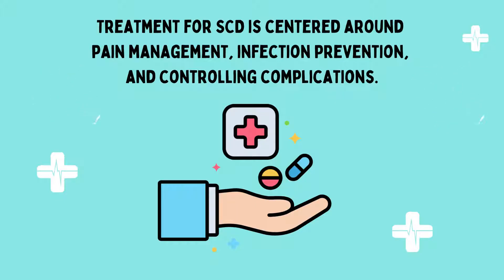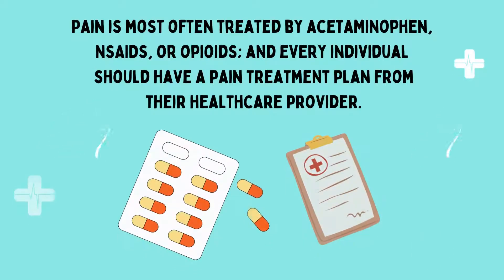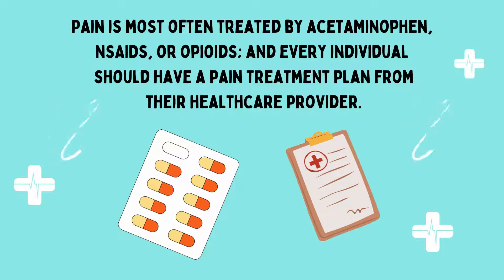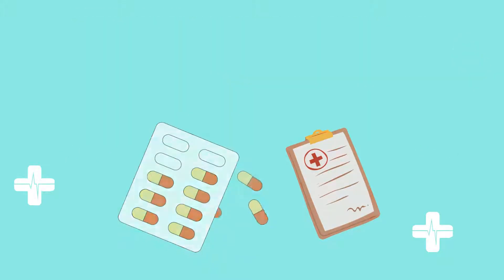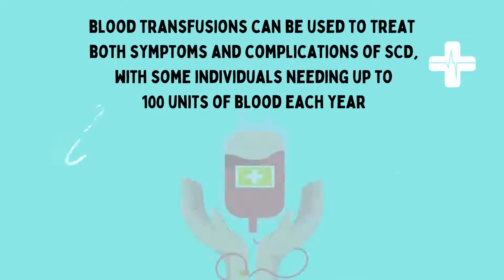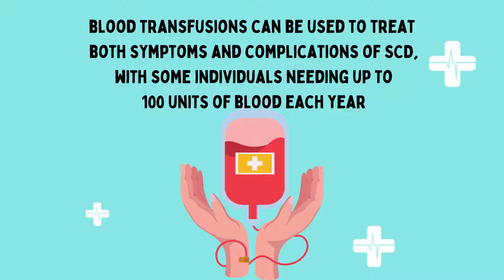Treatment for sickle cell disease is centered around pain management, infection prevention, and controlling associated complications. Pain is most often treated by acetaminophen, NSAIDs, or opioids, and every individual should have a pain treatment plan prescribed by their healthcare provider. Vaccinations are the best defense against certain bacteria and viruses that are especially dangerous to individuals with sickle cell disease.